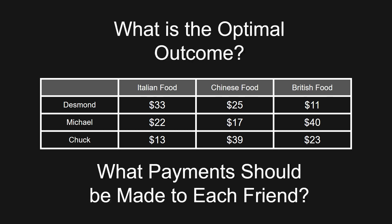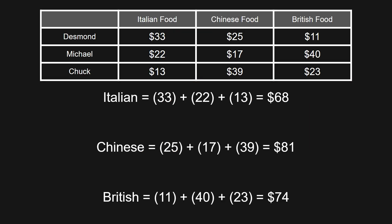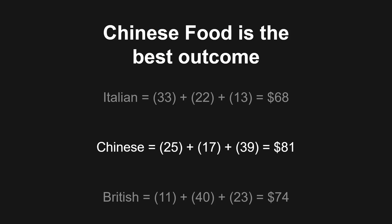Now that you have this information, you need to determine the optimal outcome using the VCG mechanism and what payments should be made to each friend. You can pause the video if you'd like to try solving this on your own. To find the optimal outcome, we need to find the sum of each friend's values for each of the three choices. For Italian food this is $63, for Chinese food it's $81, and for British food it's $74. Chinese food results in the highest sum of utilities, so Chinese food is the best option in this scenario.